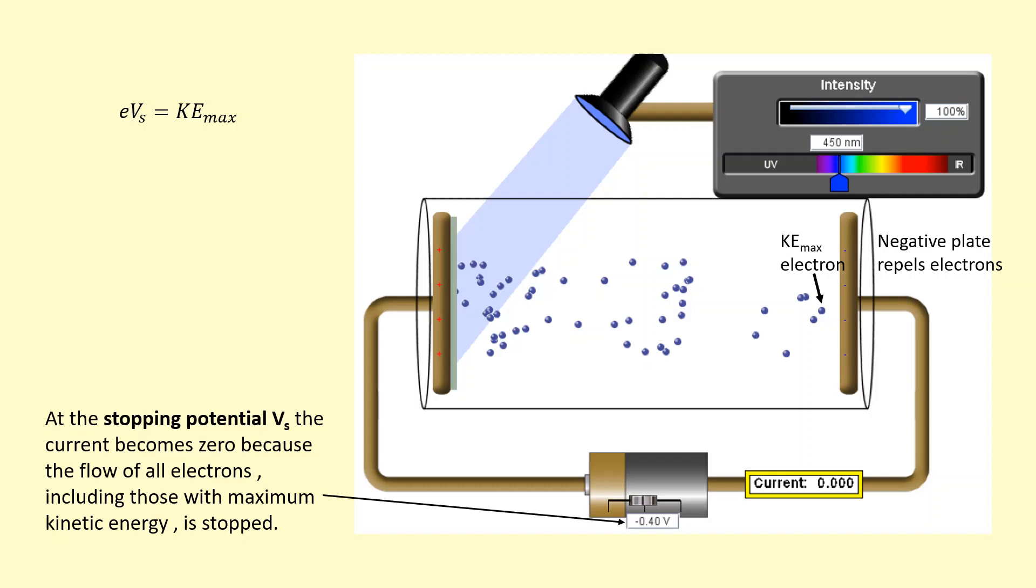So in this case, the stopping potential over here is 0.4 volts. So if you multiply that by the charge of the electron, we can get the maximum kinetic energy, which is 6.4 times 10 to the power of minus 20 joules.